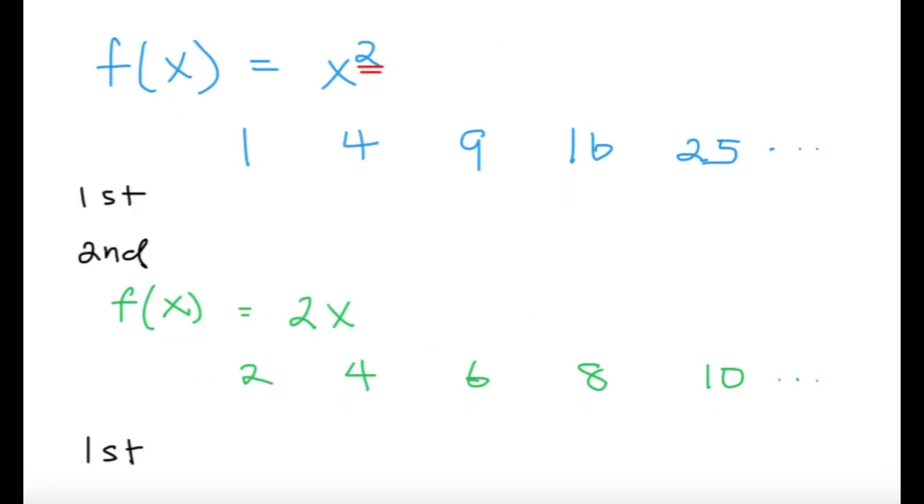But before that, let's try to see some examples with quadratic and linear functions. For example, I have a quadratic function f(x) equals x squared. If I substitute 1, 2, 3, 4, and 5, I'm going to get 1, 4, 9, 16, 25.